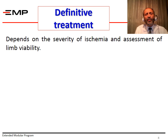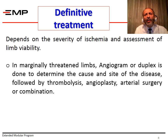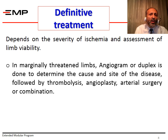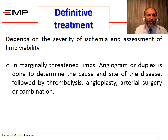Now, to the definitive treatment. Definitive treatment depends on the severity of ischemia and the assessment of limb viability. In a marginally threatened limb, you may decide to order an angiogram or a duplex to determine the cause and site of the disease. This can be followed by thrombolysis, angioplasty, arterial surgery, or a combination of any of these.